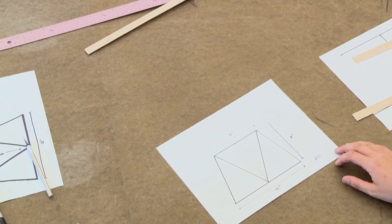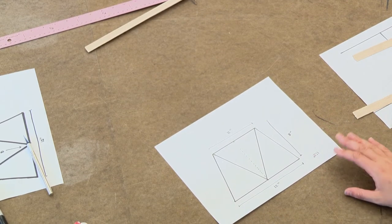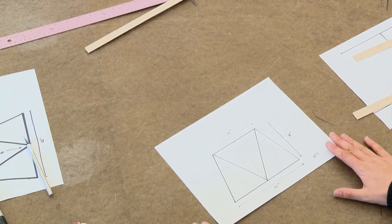I'm going to use balsa wood to construct my bridge, but you could also use cardboard, popsicle sticks, foam core, twigs, kind of whatever you can find out there.